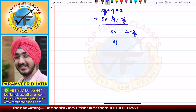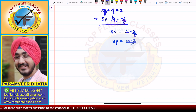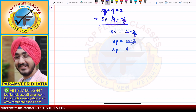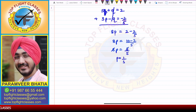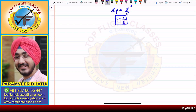From addition, 8P = 10/5 - 2/5, so 8P = 8/5. Therefore the value of P comes out to be 1/5.